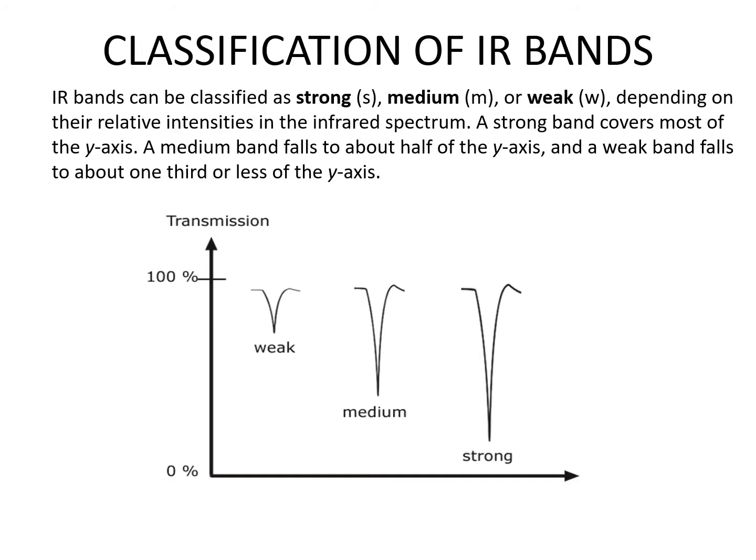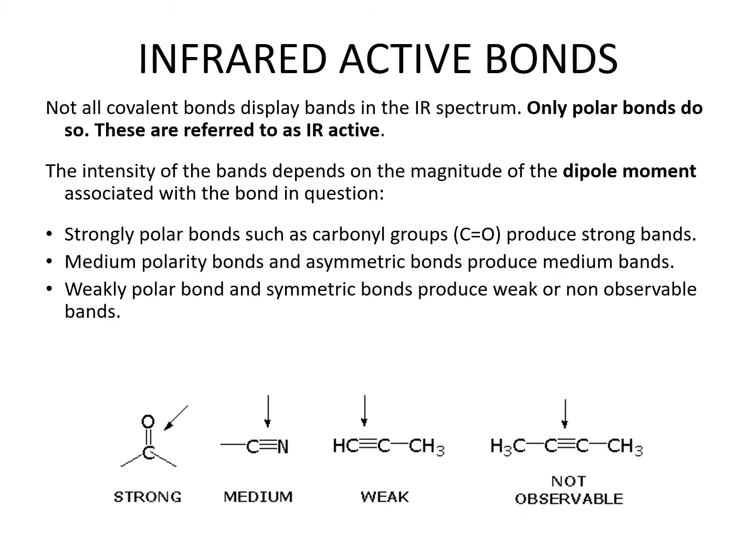IR bands can be classified as strong, medium, or weak, depending on relative intensities in the infrared spectrum. A strong band covers most of the y-axis. A medium band falls to about half of the y-axis, and a weak band falls to about one-third or less. Not all covalent bonds display bands in the IR spectrum — only polar bonds do, referred to as IR active. The intensity of the bands depends on the magnitude of the dipole moment associated with the bond. Strongly polar bonds such as carbonyl groups C=O produce strong bands. Medium polarity and asymmetric bonds produce medium bands, while weakly polar and symmetric bonds produce weak or non-observable bands.